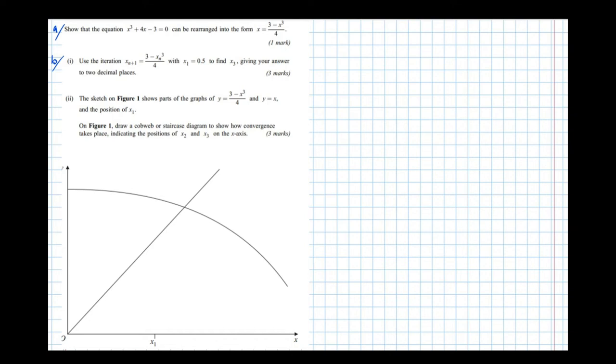In this video, we're going to look at an example of a fixed point iteration exam question. So first of all, it says show that the equation x cubed plus 4x minus 3 can be rearranged into the form x equals 3 minus x cubed over 4.